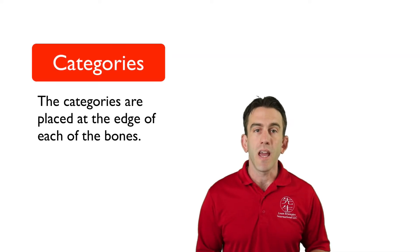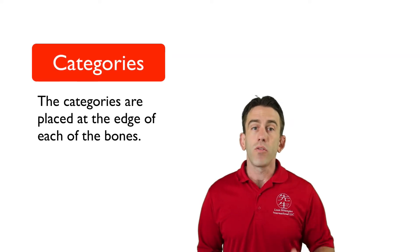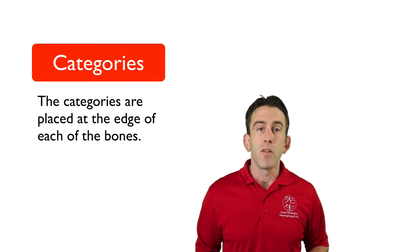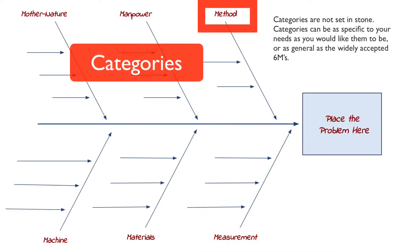After you have gained consensus on the symptom and placed it at the head of the fish, now you are ready to move on to the categories. The categories are placed at the edge of each of the bones. One common misconception of the categories is that you must always use the same categories on every fishbone diagram. This is not so.